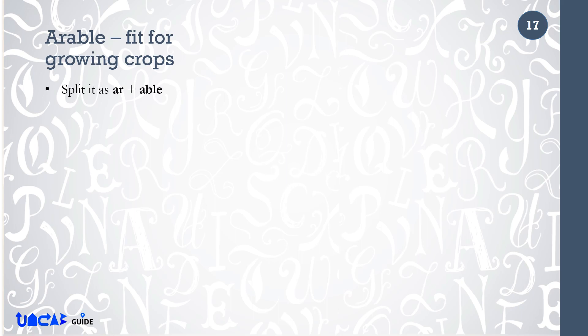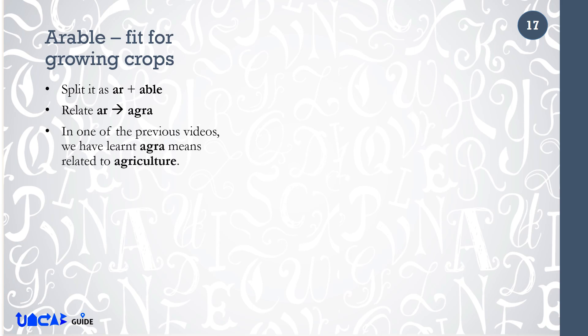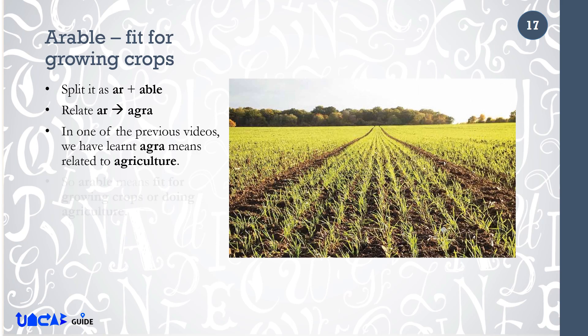Arable means fit for growing crops. Split it as AR plus ABLE. Relate AR to AGRA. In one of the previous videos, we learnt that AGRA means related to agriculture. So, arable means fit for growing crops or doing agriculture.